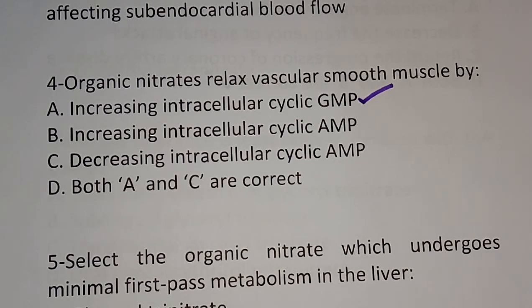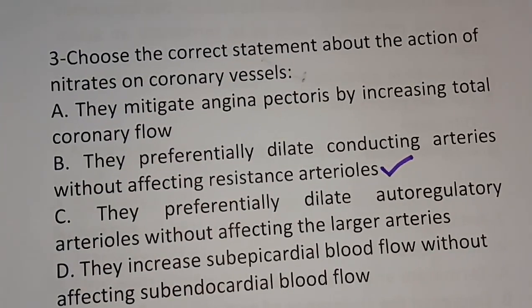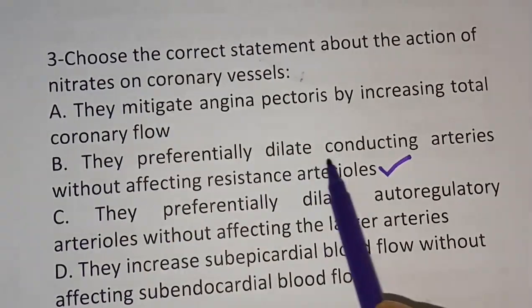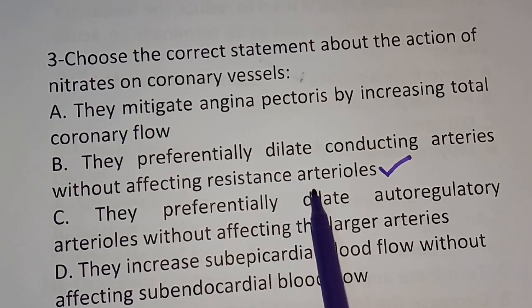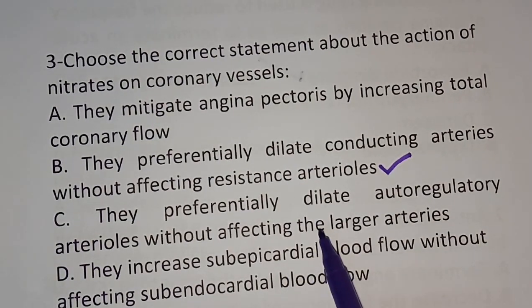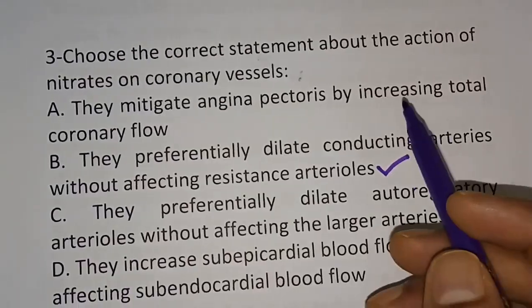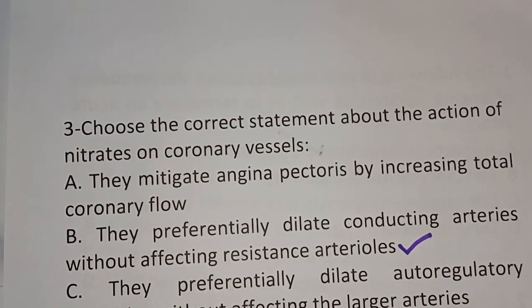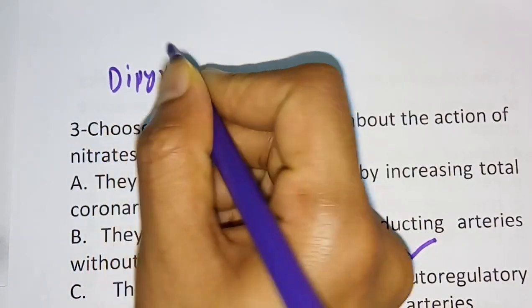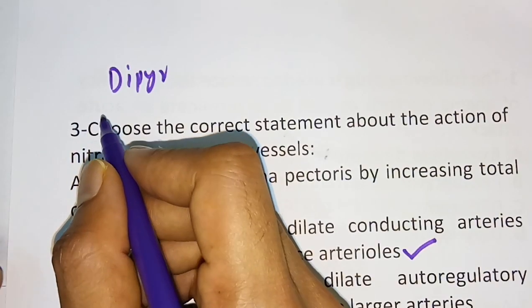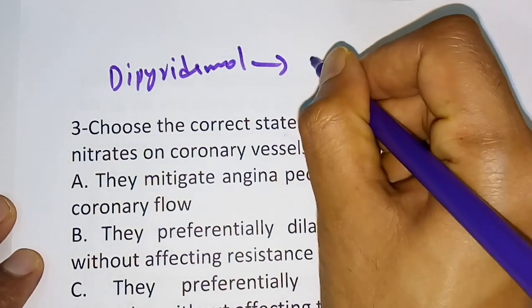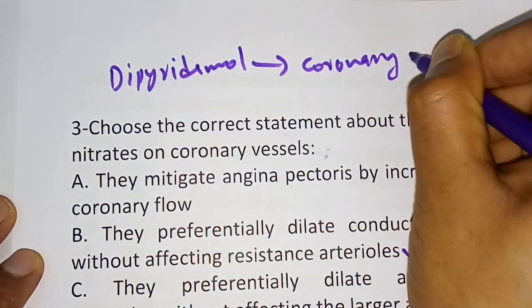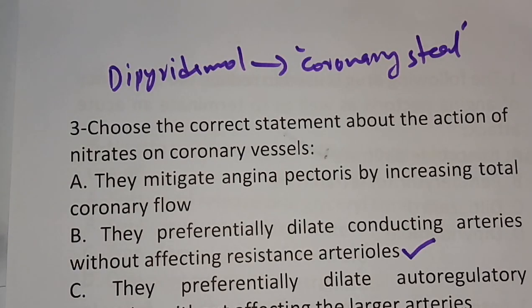An important point to note: nitrates preferentially dilate conducting arteries without affecting resistance arterioles. In contrast, dipyridamol causes coronary steal. Dipyridamol is also used as an anti-angina drug, but it causes coronary steal — remember this, as questions may directly ask which drug causes coronary steal.